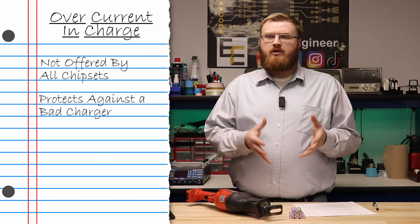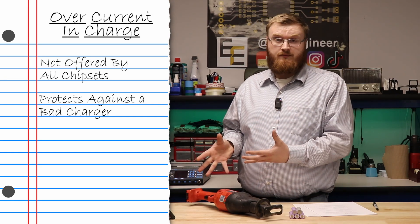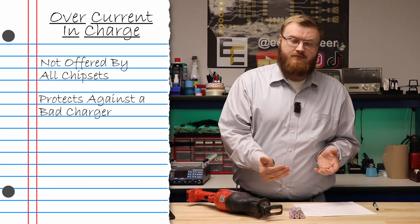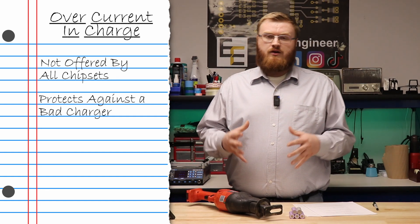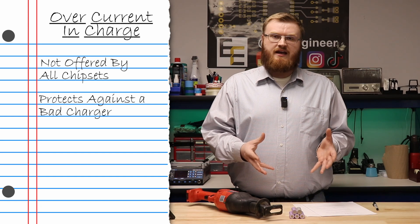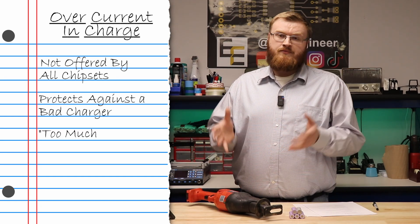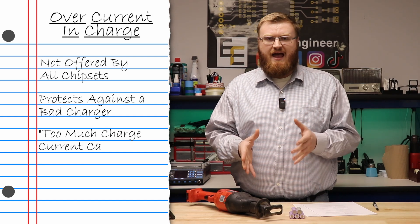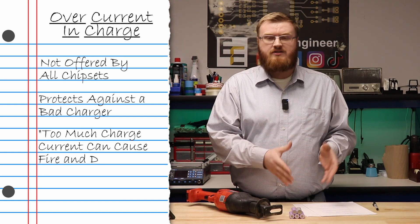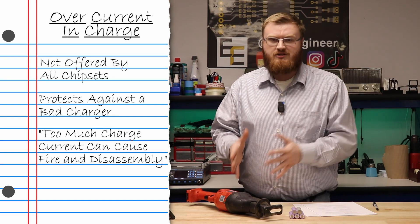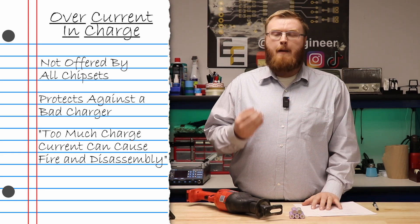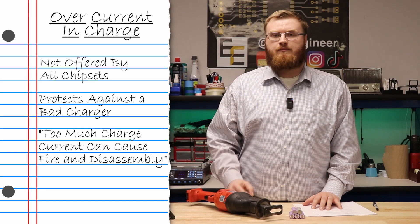It now is outputting six amps at the same voltage. Your battery pack has taken six amps in instead of three amps and your BMS heats up. The cells can't take it anymore. You have venting, possible fire and disassembly. You want to make sure that your chipset has overcurrent in charge, just like overcurrent in discharge. Current in both directions to ensure maximum safety of your battery pack.